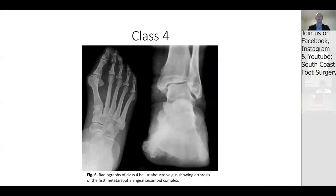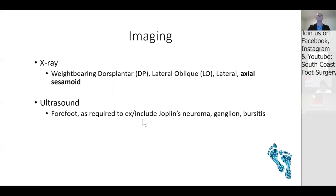Class 4 presents significant arthrosis and arthritis within the sesamoid complex alongside an enlarged bunion deformity.